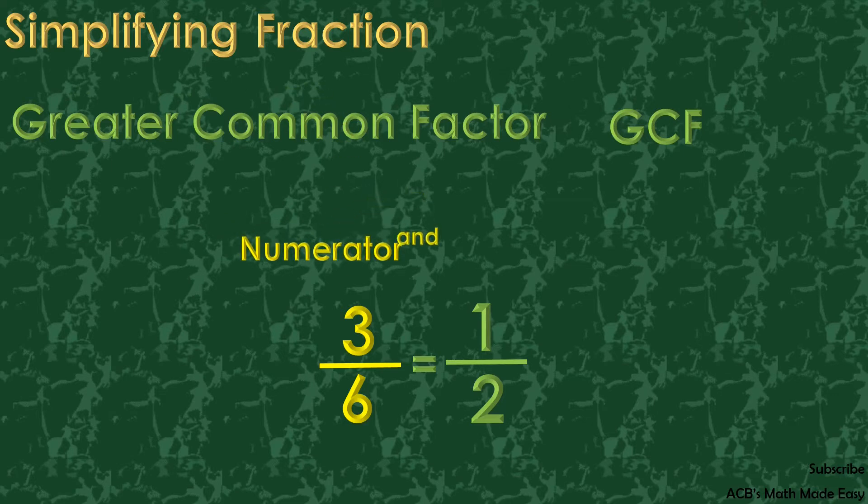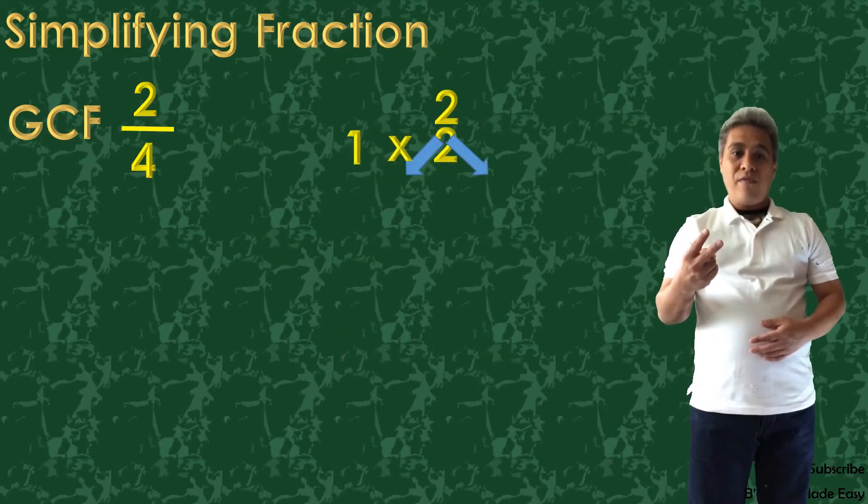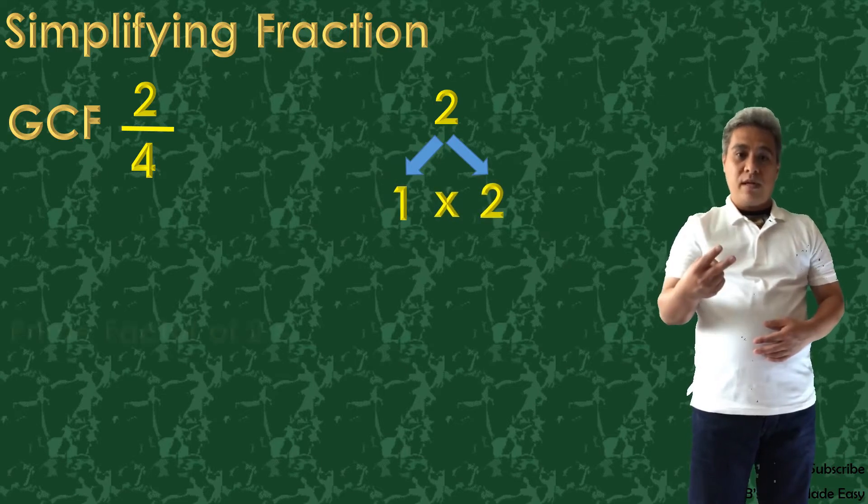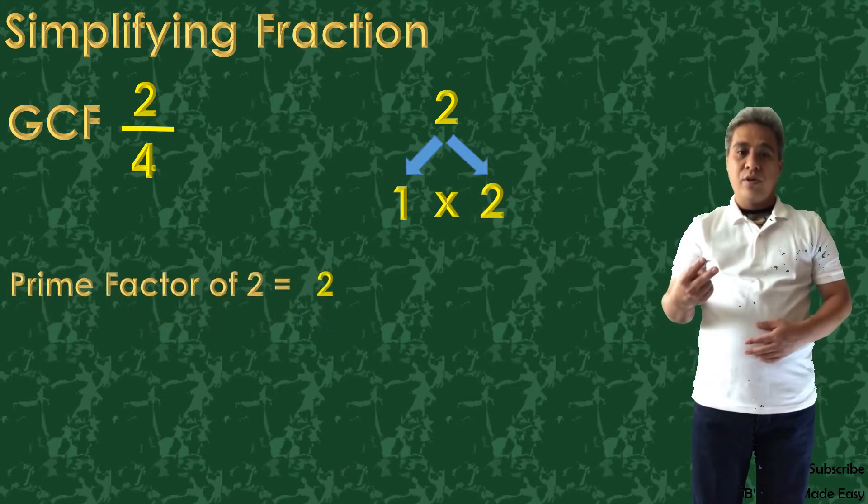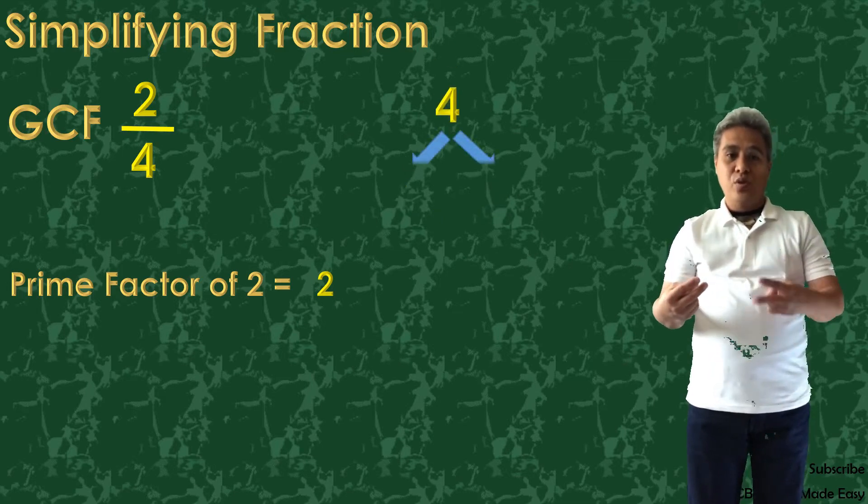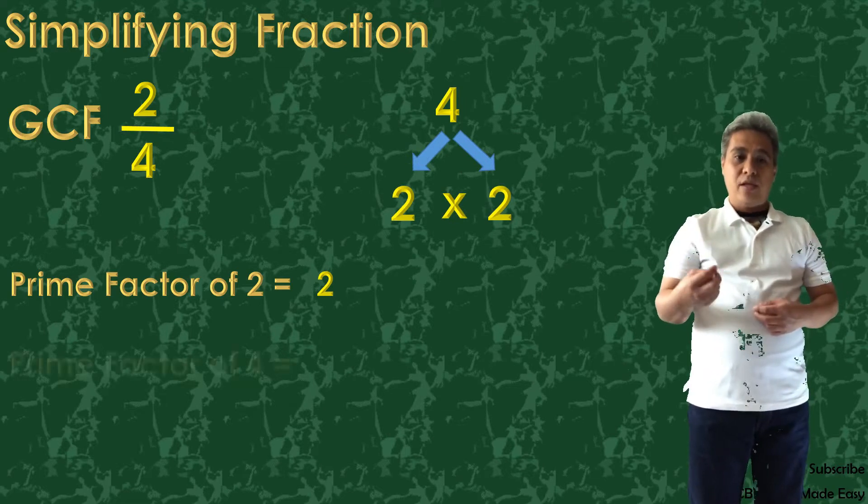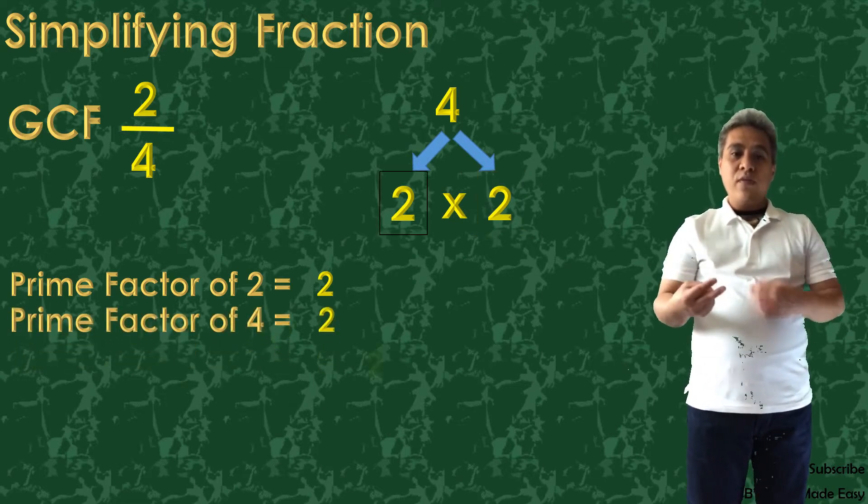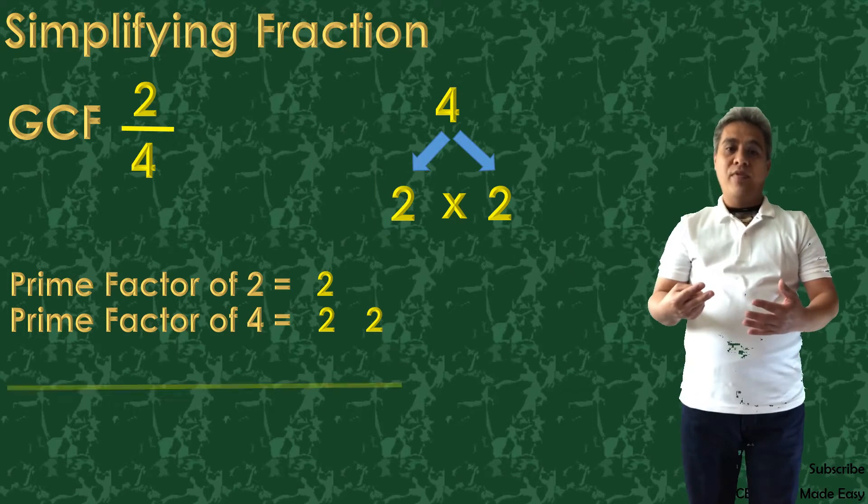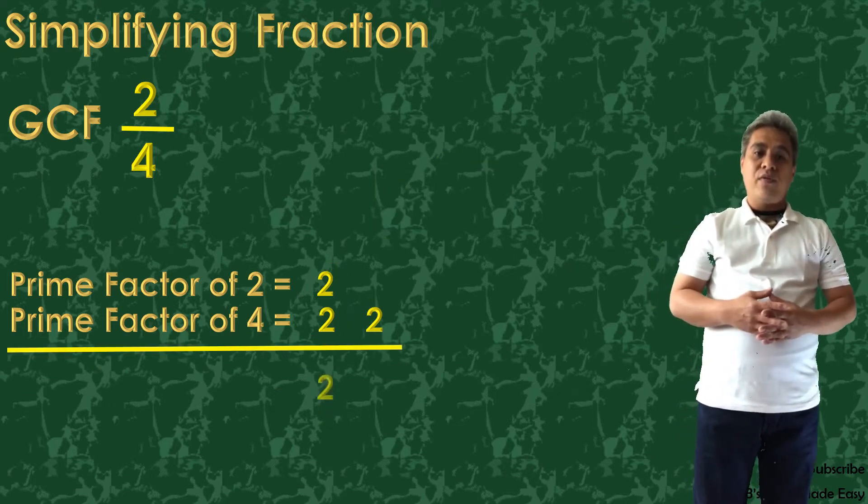To get the GCF of 2/4, we need to factor them out. 2 can be factored out by 1 times 2, so the prime factor of 2 is 2 only. Just list the prime number. 4 can be factored out by 2 times 2, and the prime factors of 4 are 2 and 2. 2 and 4 has only one common factor of 2. So, the greatest common factor of 2 and 4 is 2.